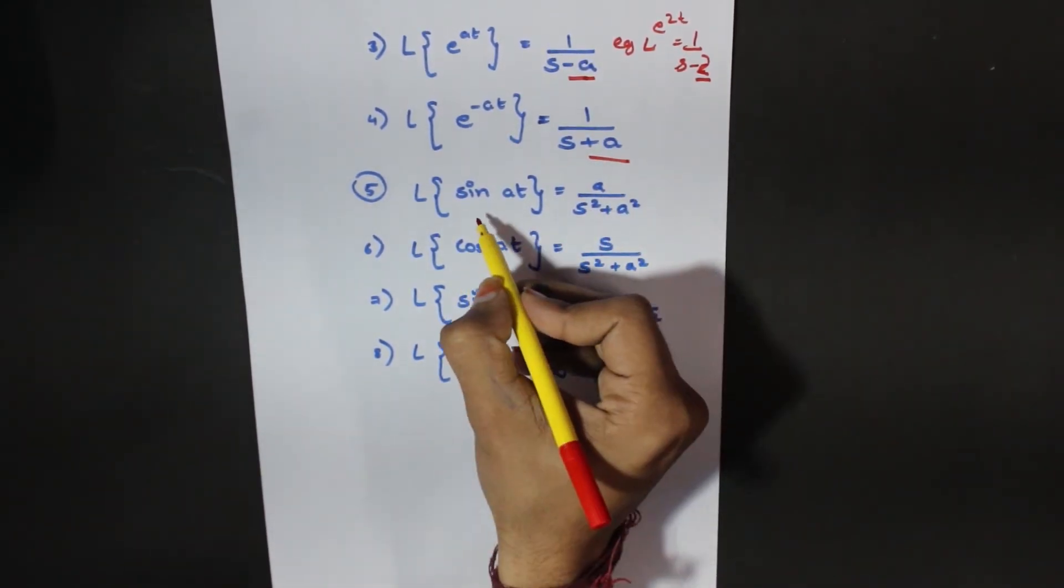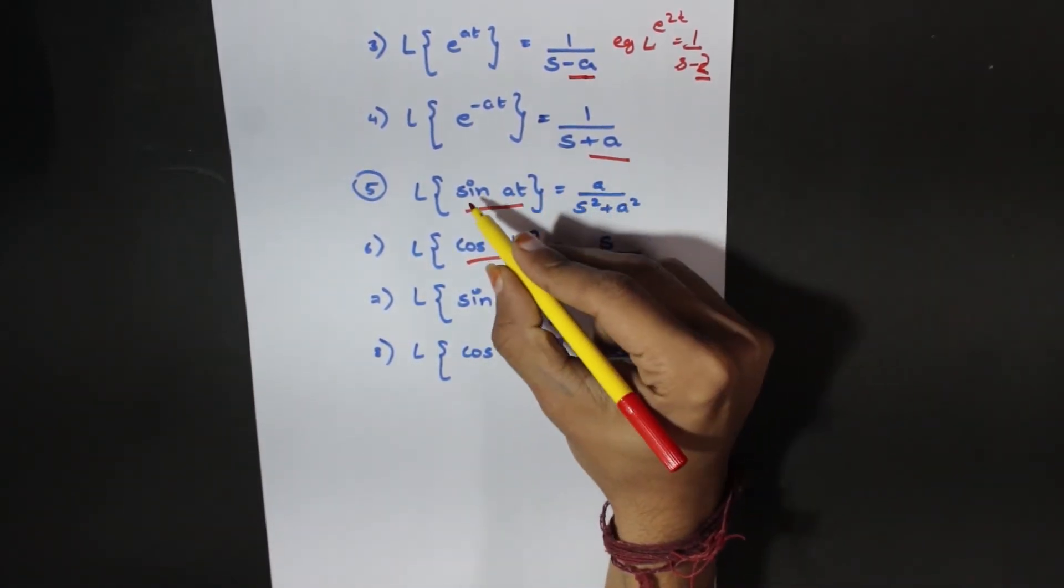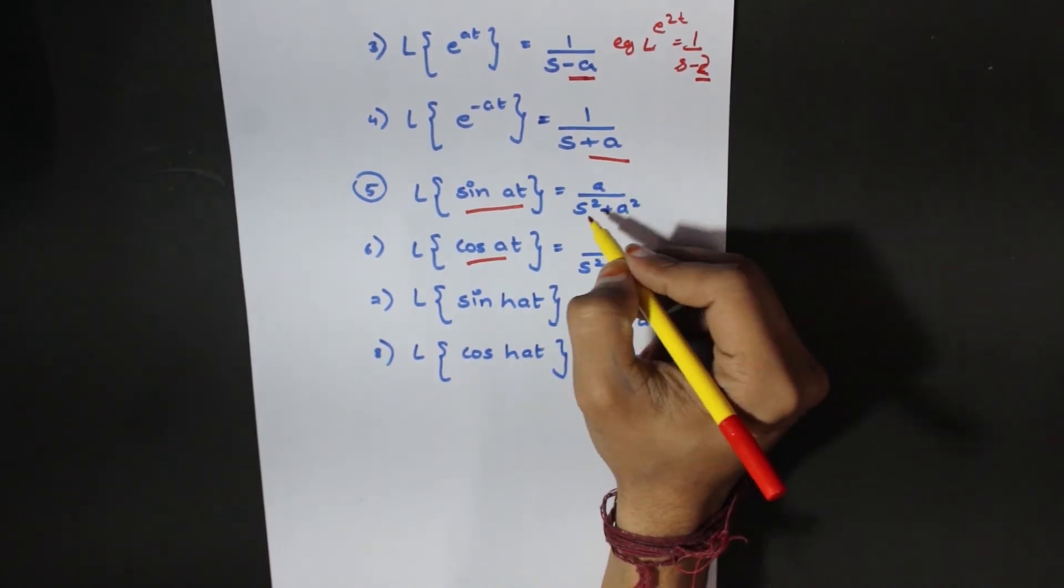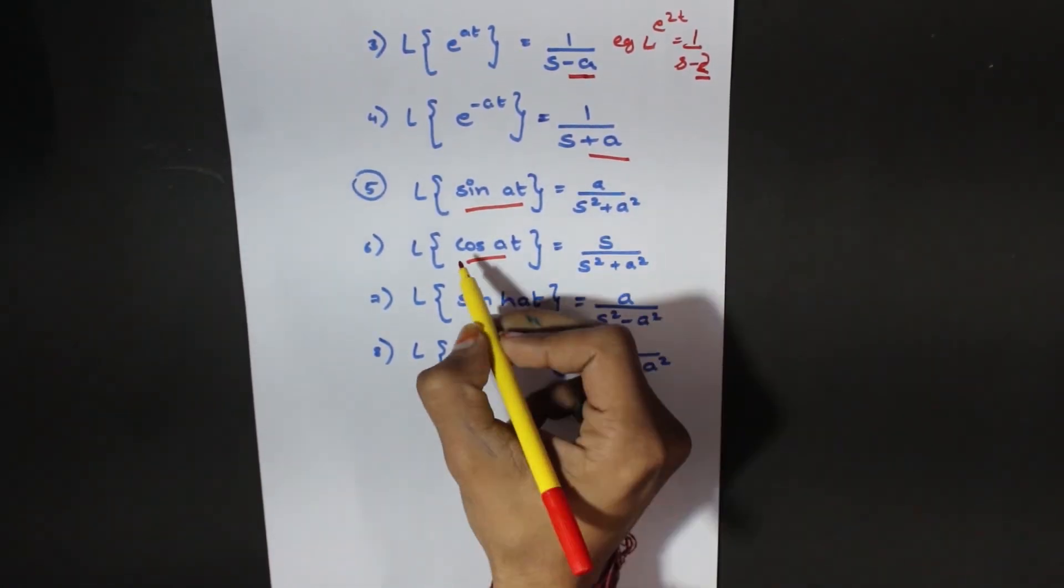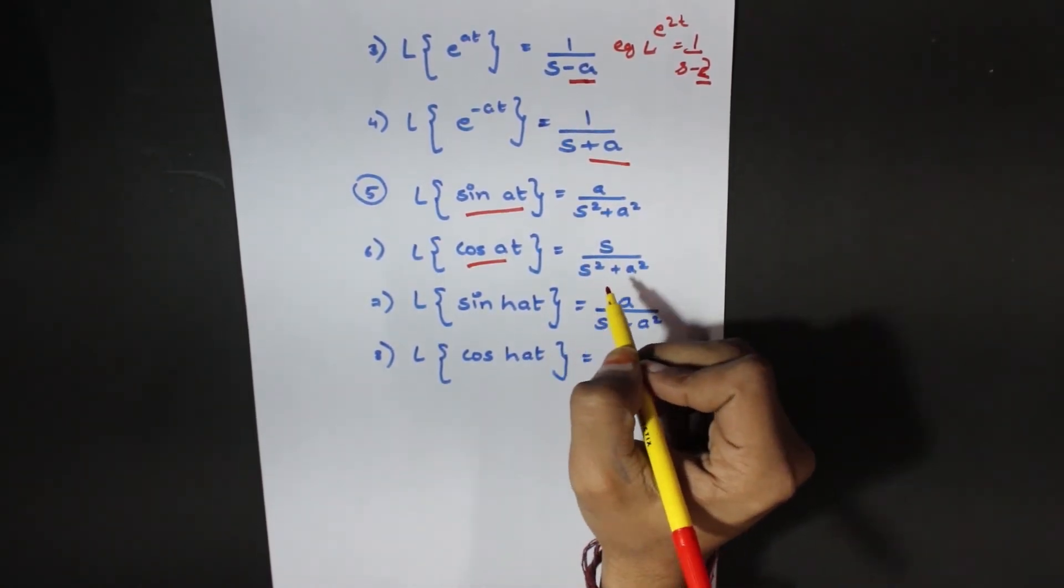Then we have trigonometric functions, like sine and cos. This is Laplace of sine of at is equal to a over s square plus a square. Laplace of cos at is equal to s over s square plus a square.